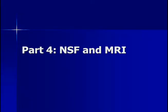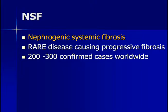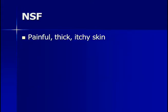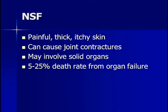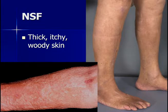Nephrogenic systemic fibrosis (NSF) is a rare disease causing progressive fibrosis in the tissues. Between 200 and 300 cases have been confirmed worldwide. It can occur within two weeks up to a month after exposure to gadolinium-based contrast agents in patients with impaired renal function. Patients with NSF develop painful, thick, itchy skin, joint contractures, and it may involve solid organs. Between 5 and 25% of patients can die from organ failure. NSF is diagnosed with a skin biopsy. This is an example of a patient with NSF, showing thick, itchy, woody skin and eventual joint contractures.